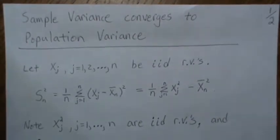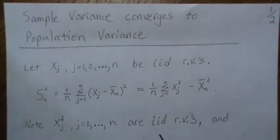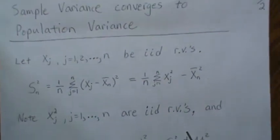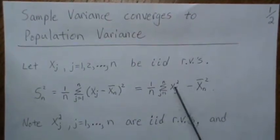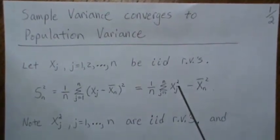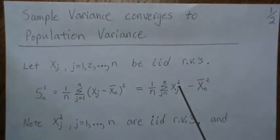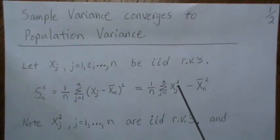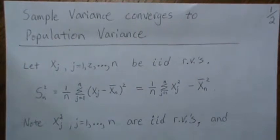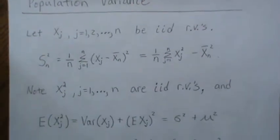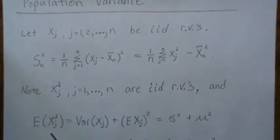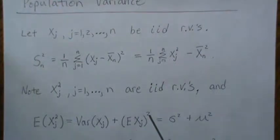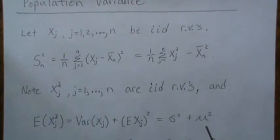Note that XJ² for j from 1 to n are random variables, because XJ are random variables and x² is a continuous function. Continuous functions of random variables are random variables. So XJ² is a random variable and we can talk about its expected value, which can be shown to be the variance plus the mean squared: σ² + μ².